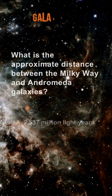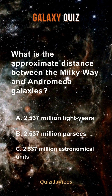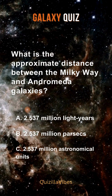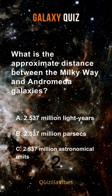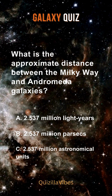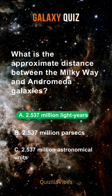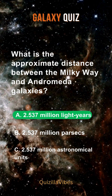What is the approximate distance between the Milky Way and Andromeda galaxies? 2.537 million light-years.